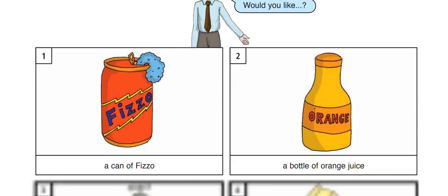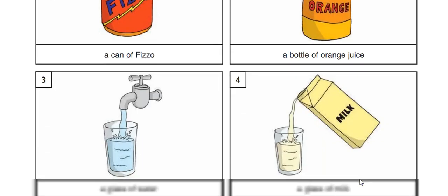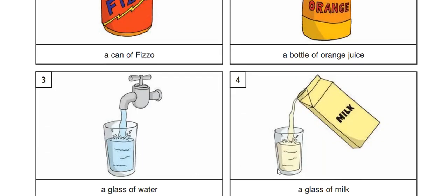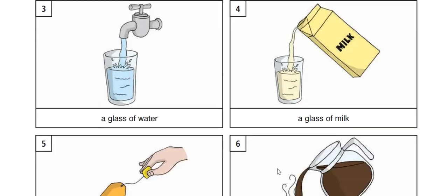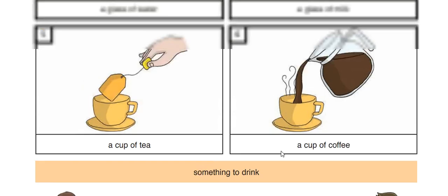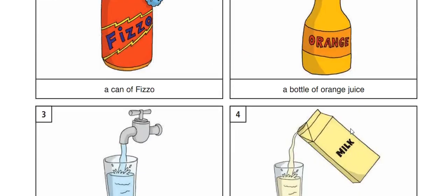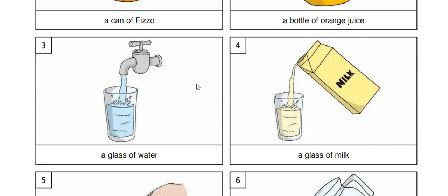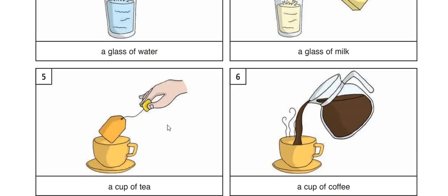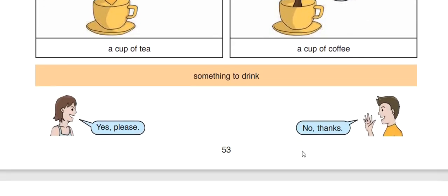Would you like a can of fizzy drink? Would you like a bottle of orange juice? Would you like a glass of water? Would you like a glass of milk? Would you like a cup of tea? Would you like a coffee? Now it is your turn to practice. Would you like picture one through six? Something to eat? Yes, please. No, thanks.